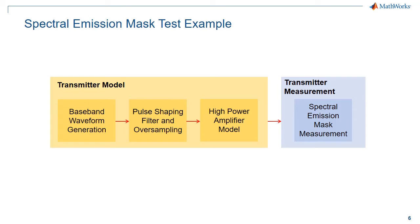In this example, we generate a standard compliant 802.11ad waveform containing five packets. We pass this waveform through a pulse shaping filter and oversample it. Next, we apply a high power amplifier model which introduces in-band distortion and spectral regrowth. Finally, we test that the resultant spectral emissions are within the standard defined mask.